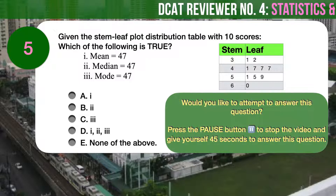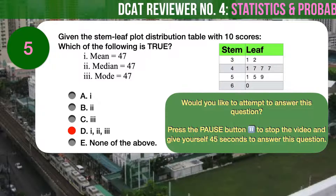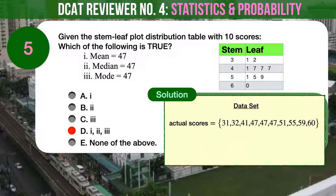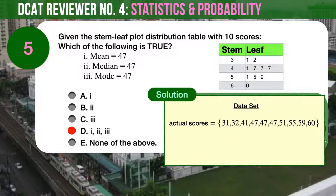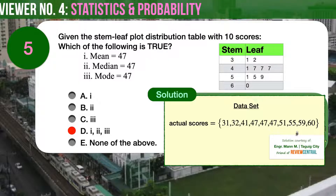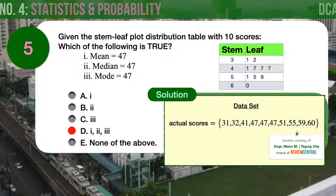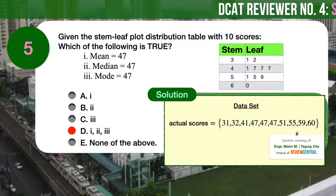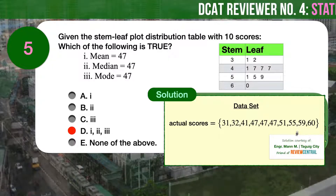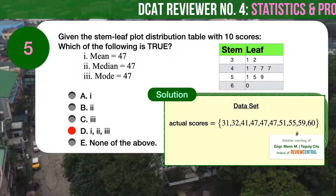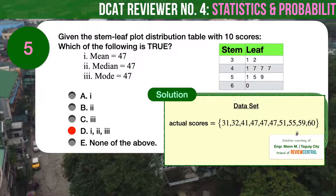The correct answer is D — 1, 2, and 3 are all true. First of all, what is a stem and leaf plot? A stem and leaf plot is a simple kind of graph that is made out of the numbers themselves. It is a means of displaying the main features of a distribution.